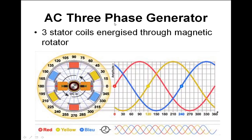We've got a three-phase generator, and this is pretty much what you find in power plants. If you go to Ferrybridge power station or Drax power station, even a nuclear power station eventually comes down to a massive generator. You energize the rotor with DC — put some electricity into the rotor — and as it spins around, power is induced into the coils which go all the way around.